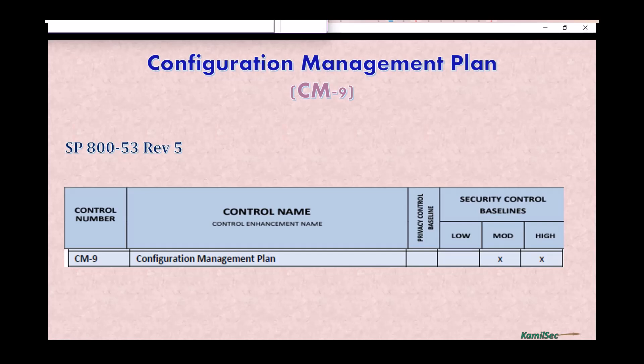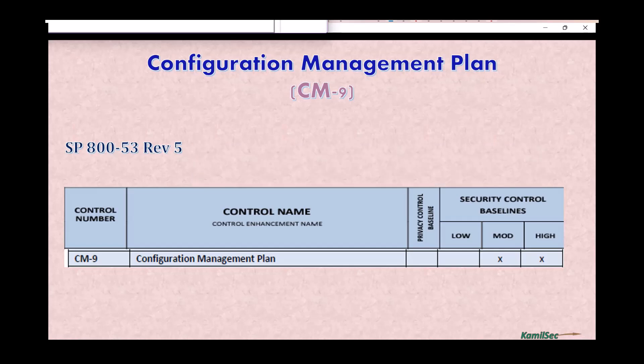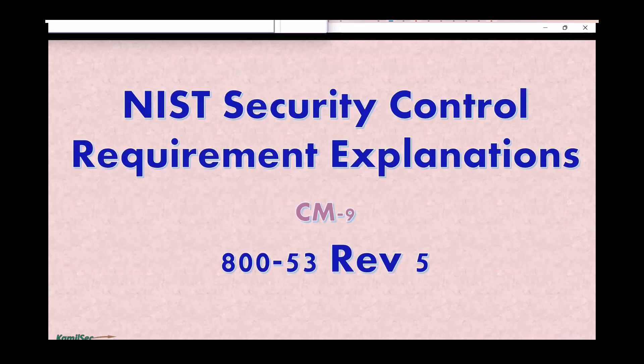The configuration management plan — CM9 — is selected for the moderate and high baselines in NIST SP 800-53 Rev 5. It is not selected for the low baseline.